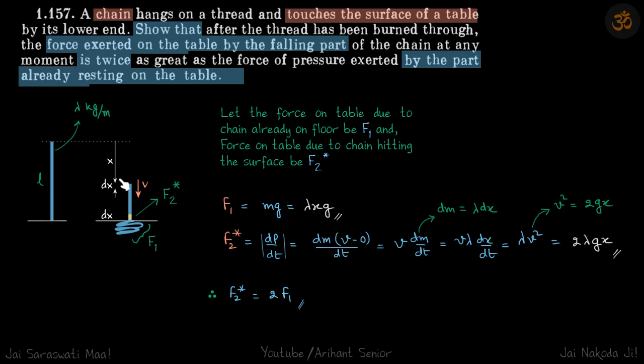Now it has fallen x distance and then it further falls dx distance. So when the chain falls dx, you can imagine that this part of the chain which is of height dx had initially some momentum which was MV and finally it came to rest.